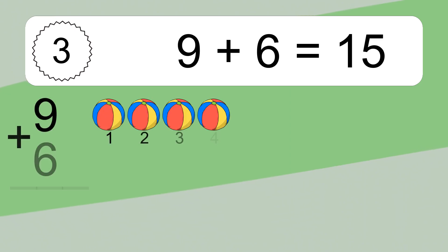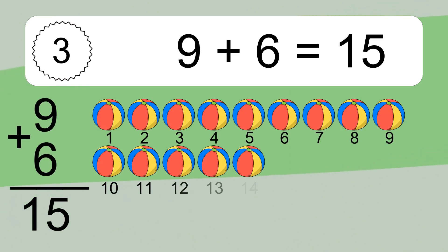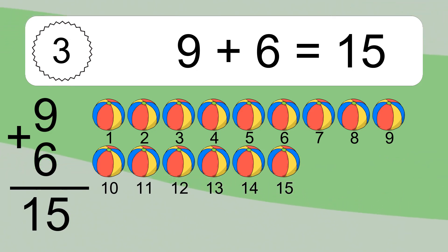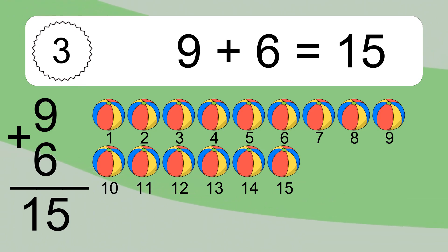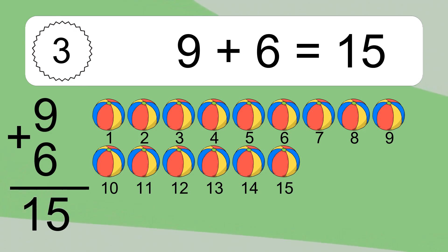9 plus 6 equals 15. Let's count it. 1, 2, 3, 4, 5, 6, 7, 8, 9, 10, 11, 12, 13, 14, 15.